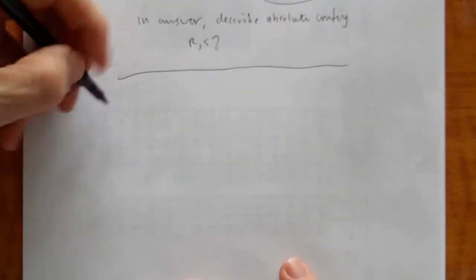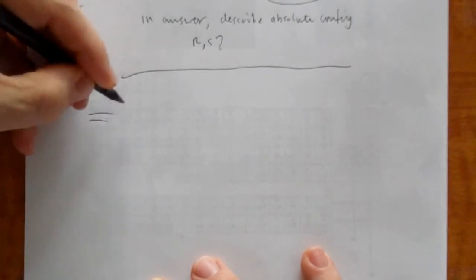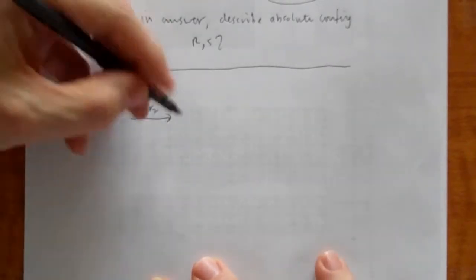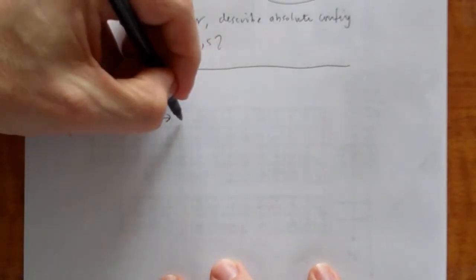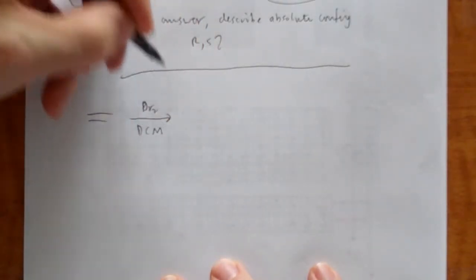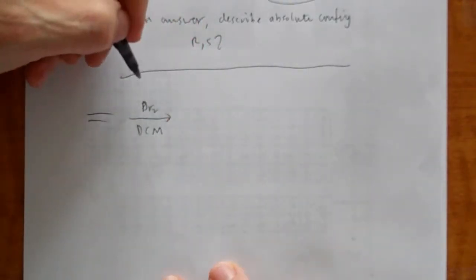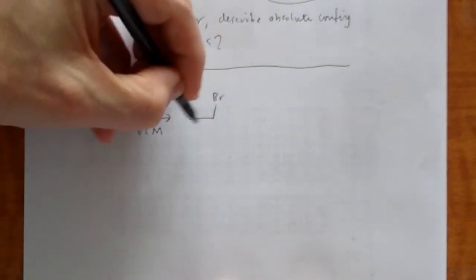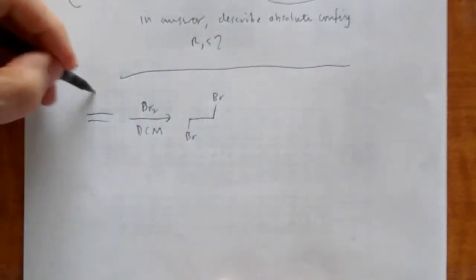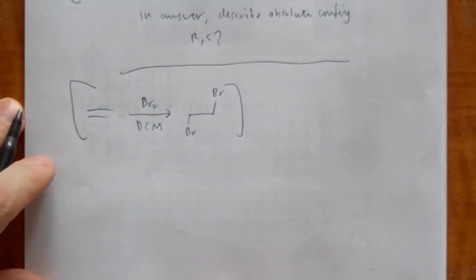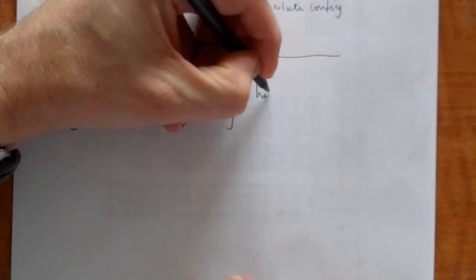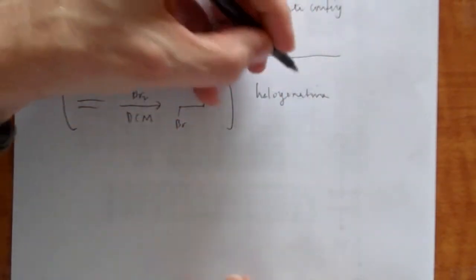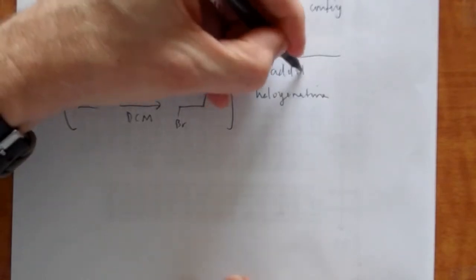I do have one more question I want to ask. I'm not going to do a video on this reaction. So I did a video on this reaction. This Br2, right? This is probably done in dichloromethane or DCM or CH2Cl2, which is what DCM stands for. And that gives you this, right? I did that mechanism. Okay, and this is called halogenation. It's a sub-mechanism of addition.